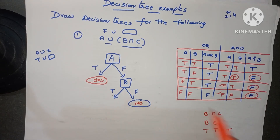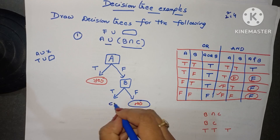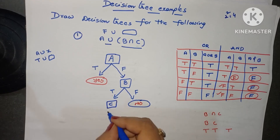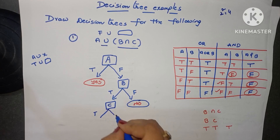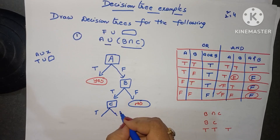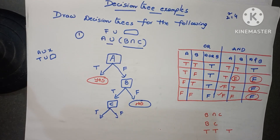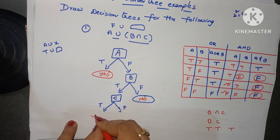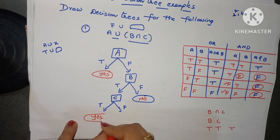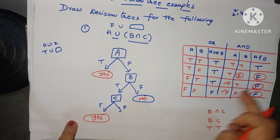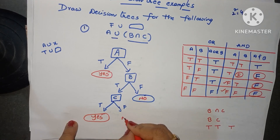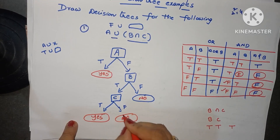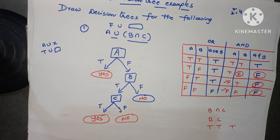If B is true, then only we go for the second condition: node C. C value is either true or false. If C is true: true AND true — the result is YES. If B is true but C is false: true AND false — the result is NO. This is the decision tree algorithm for the Boolean example A union B intersection C.